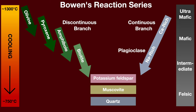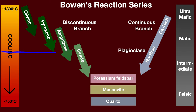Let's talk about the discontinuous branch first. If we have a magma that's 1300 degrees Celsius and we start to cool it down, the first mineral to crystallize is olivine. Olivine continues to crystallize until we reach a certain temperature, at which point pyroxene begins to crystallize — and there's a little gap where both are crystallizing at the same time. But eventually, as the magma continues to cool, olivine no longer crystallizes. It's important to keep in mind that as a mineral is crystallizing, it is taking element constituents out of the magma. The magma continues to cool, pyroxene is crystallizing, and then we get to a point where amphibole begins to crystallize. For a time, pyroxene and amphibole are both crystallizing, and then no more pyroxene — only amphibole. As we continue to cool down, biotite begins crystallizing, and then amphibole stops.